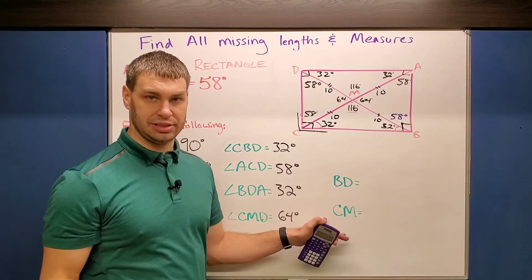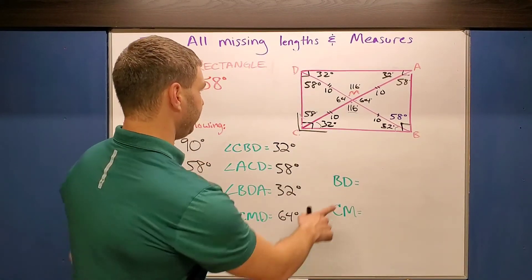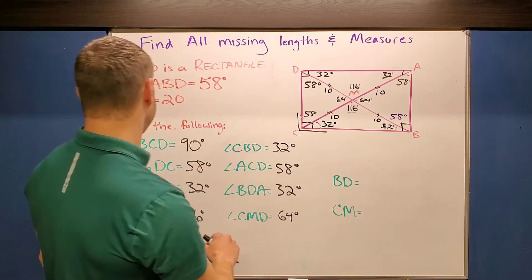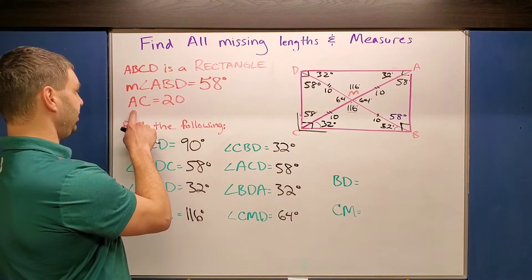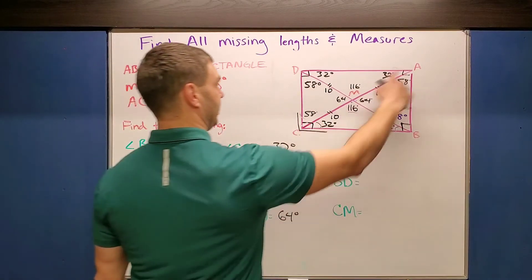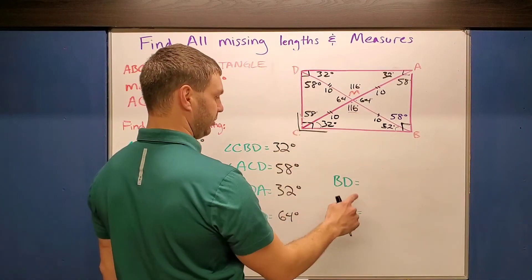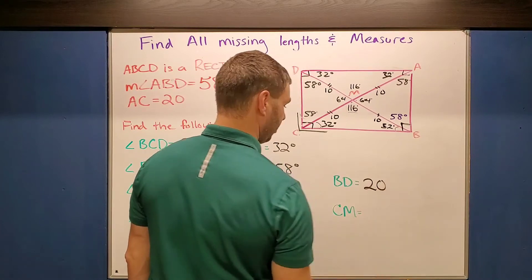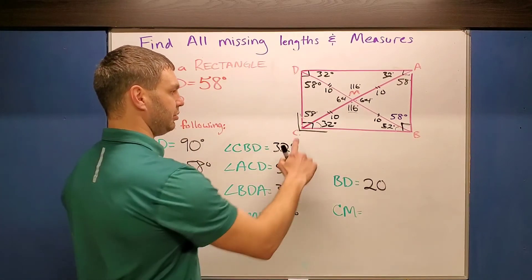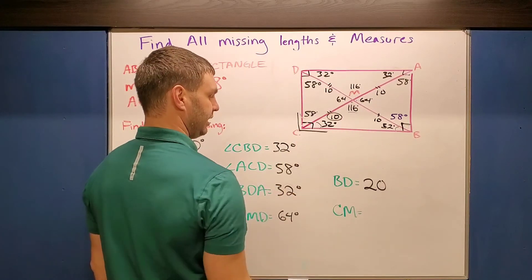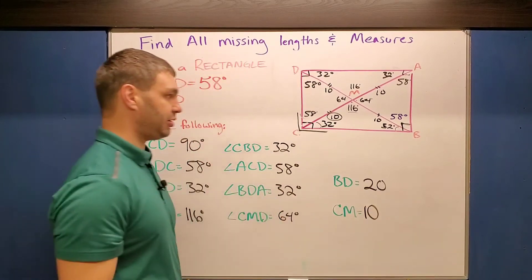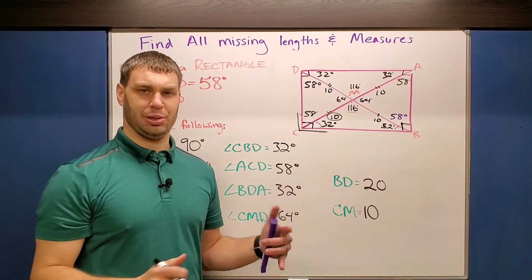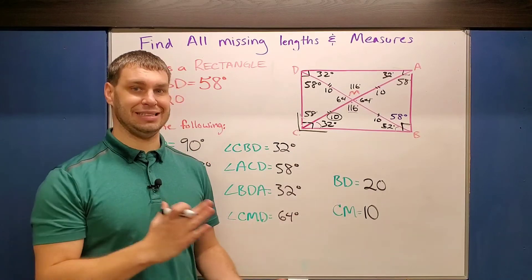Then I have two that are not angles — these are side lengths. It wants BD. If I remember that AC was 20, and since in a rectangle the diagonals are equal, then BD is also going to be 20. And then lastly, CM — that's half of the diagonal, which we said earlier was 10. The rectangle looks a little crowded when you're done, but you can find every missing side length and angle in a rectangle with just a few given measurements.